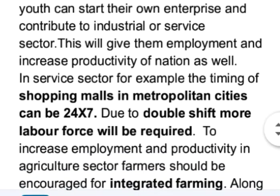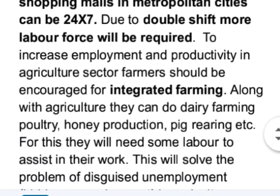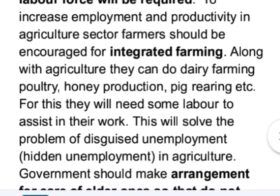In the service sector, for example, the timing of shopping malls in metropolitan cities can be 24/7. Due to double shift, more labor force will be required. To increase employment and productivity in the agriculture sector, farmers should be encouraged for integrated farming. Along with agriculture, they can do dairy farming, poultry, honey production, pig rearing, etc. They will need some labor to assist their work, which will solve the problem of disguised unemployment in agriculture.